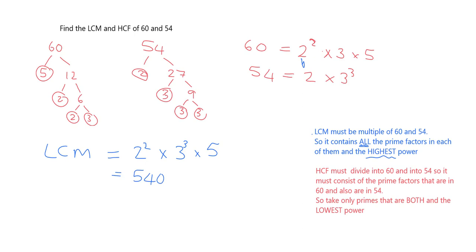What about the highest common factor? Despite the fact that you're looking for the highest common factor, you only pick the primes that are in both, and you pick the lowest power. Two is in both, three is in both, but five is not in both. So I take 2 and 3 with the lowest powers: 2 to the 1 and 3 to the 1. So 2 × 3 = 6. The highest common factor is 6.